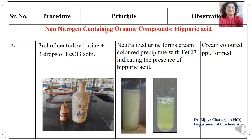The next organic compound tested is hippuric acid, a non-nitrogenous organic compound. Take 3 ml of neutralized urine and add 3 drops of FeCl3 (ferric chloride). First check the pH of the urine and neutralize it if acidic or basic. On adding ferric chloride to the neutralized urine sample, if hippuric acid is present, the sample turns creamish in color — a creamish colored precipitate is obtained.